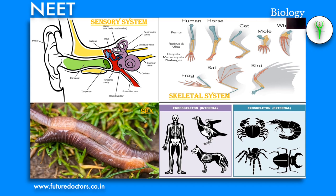Skeletal system: the skeletal system is the internal or external framework that provides support and shape to the body. It is divided into two: endoskeleton (internal) and exoskeleton (external). Exoskeleton is the hard supporting and protective framework present on the exterior of the body, made up of non-living matter. Examples: external shells of molluscs, cuticle of arthropods, scales of fishes and reptiles, feathers of birds, hairs, hooves, nails, horns and claws of mammals.